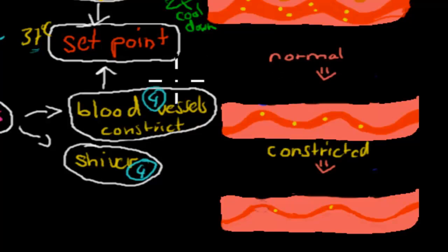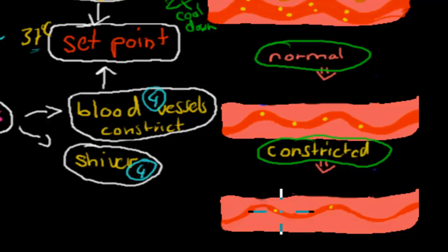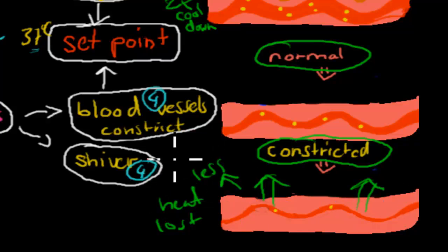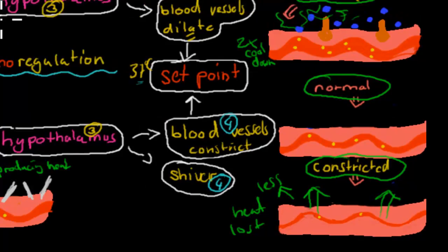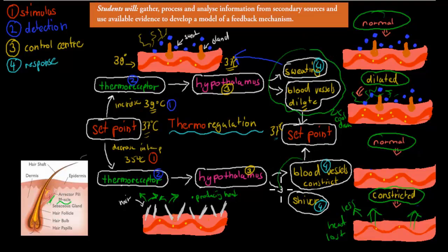The other response is blood vessels constricting — constricting means they become smaller than usual. Here at our skin, we now have less blood and less heat flowing to the skin, which means less heat is lost to the surroundings. Usually heat escapes through the skin, but if there's less blood flowing there, there's less heat loss as well. So those are our responses: sweating and blood vessels dilating when too hot, and blood vessels constricting and shivering when too cold.